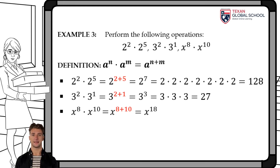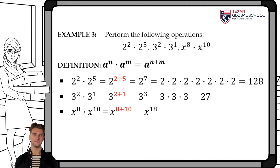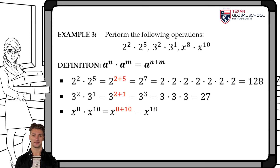The second example is 3 squared times 3. We simplify to the same base 3 raised to the sum of the exponents 2 plus 1. So it is 3 cubed, which equals 27. Finally, x to the eighth power times x to the tenth power is simplified as x to the 18th by adding the exponents.